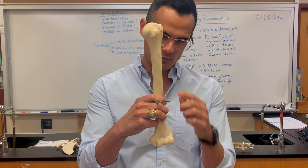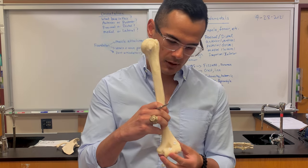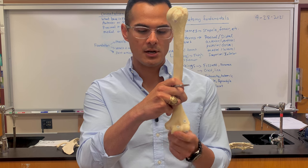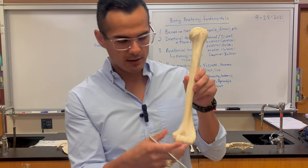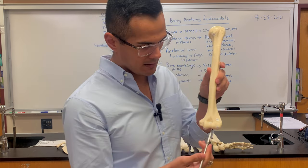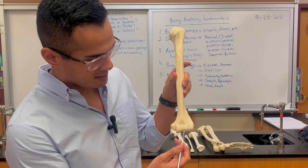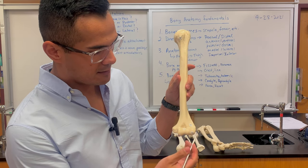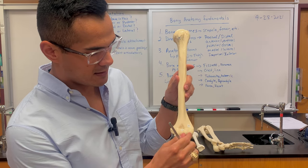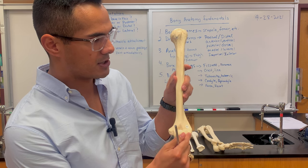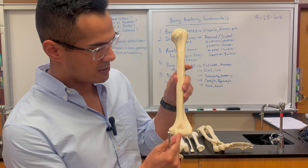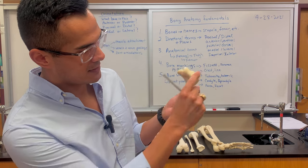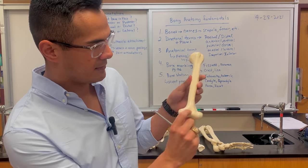Working our way down, I've already pointed out the medial epicondyle. This part is what's known as the trochlea, and then this is what's known as the capitulum — you can kind of see the shape of it.